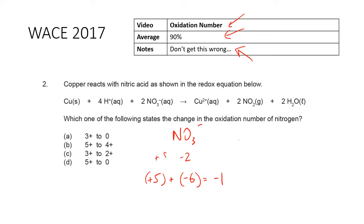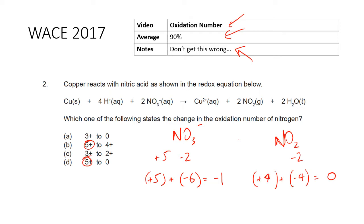Since there's only one nitrogen, it's positive five. Now for NO₂ — it's a neutral molecule, so the sum of oxidation numbers equals zero. Oxygen is negative two, two oxygens makes negative four. What plus negative four makes zero? Positive four. Since there's only one nitrogen, it's positive four. Therefore B is the answer. That's why 90% of students got it — make sure you can work out oxidation numbers and remember all the rules.